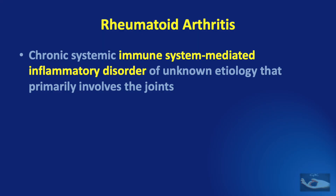Rheumatoid arthritis is basically an immune system-mediated inflammatory disorder, caused in many cases by interaction between genes and environmental factors, including tobacco. Though the exact etiology is unknown, both genetic and environmental factors play a very important role in its development. Obesity is also a well-established risk factor: there is a 30% increase in the risk of developing the disease for patients with a BMI greater than 30 kg per square meter, and a 15% increased risk for those with a BMI of 25 to 29.9 kg per square meter.